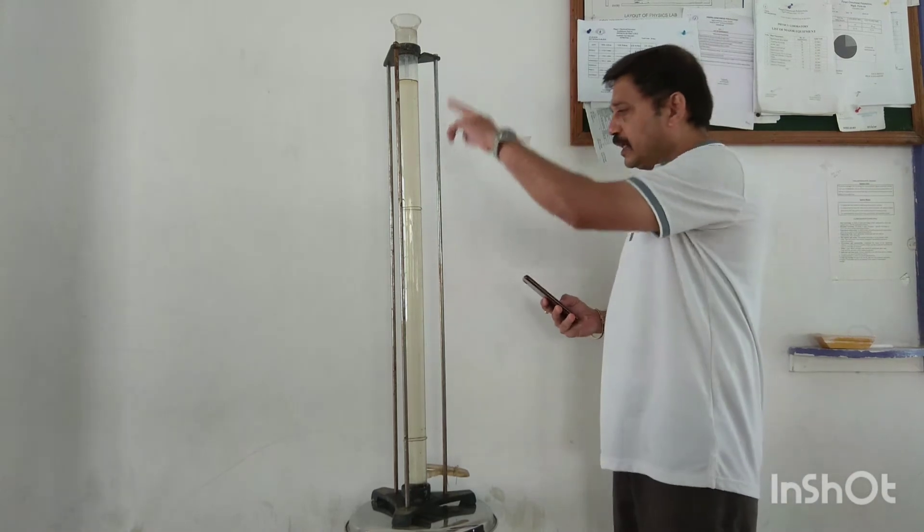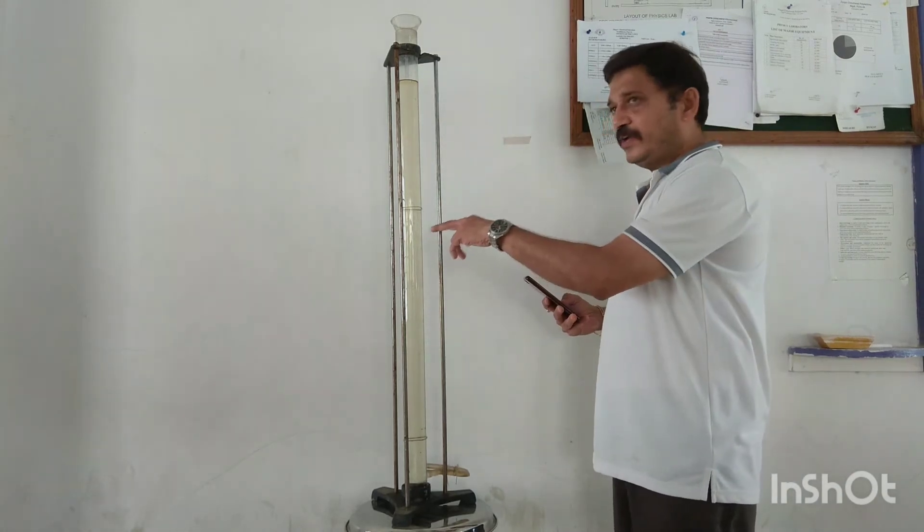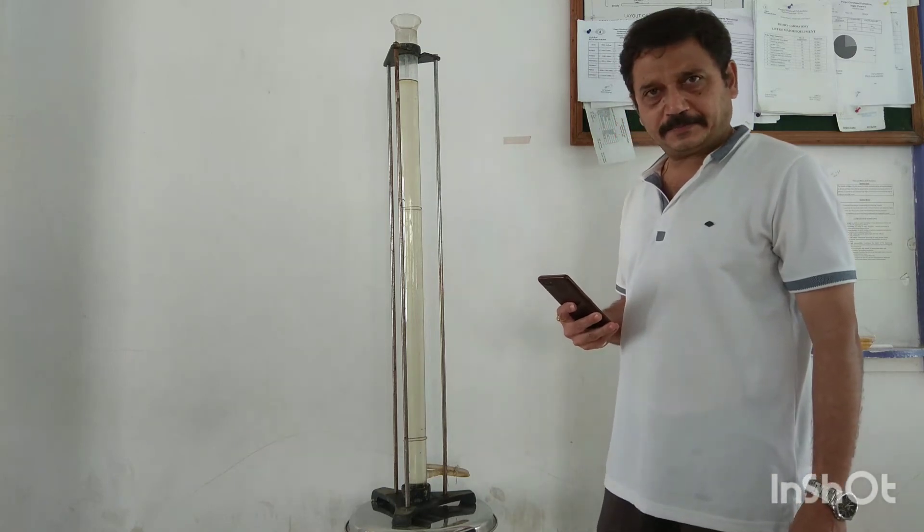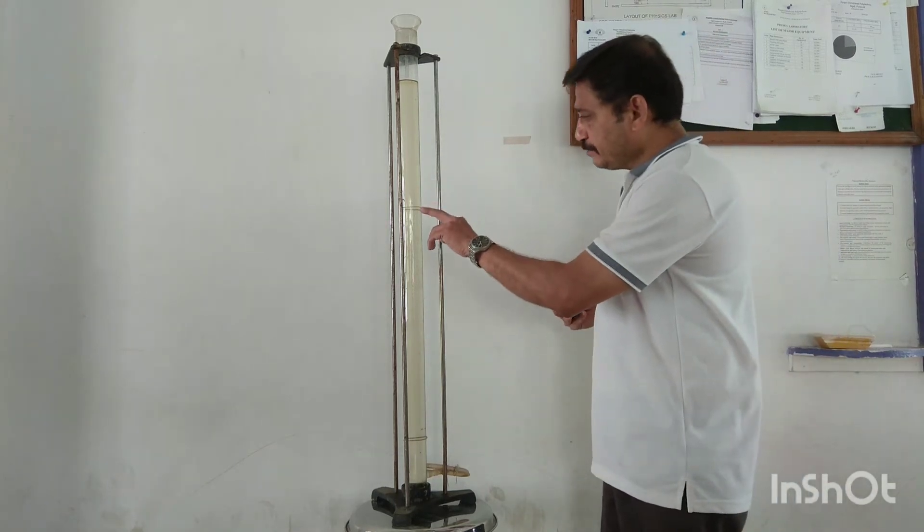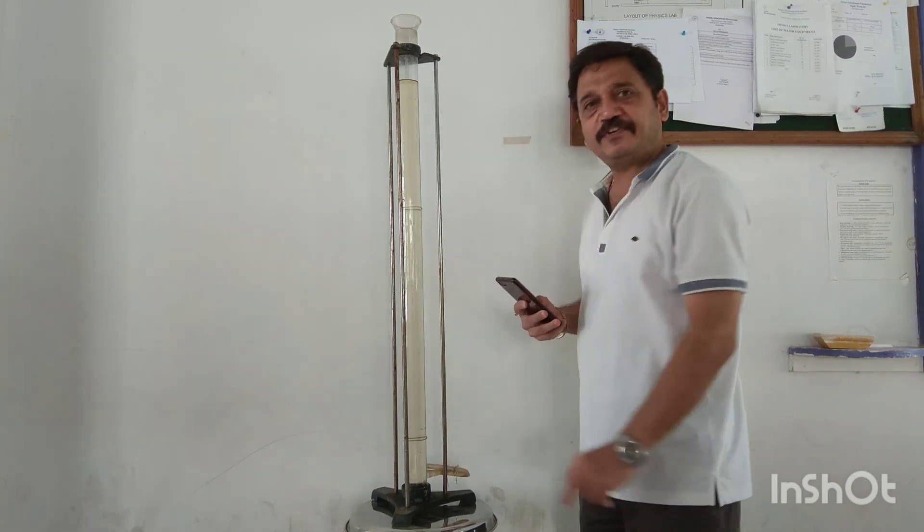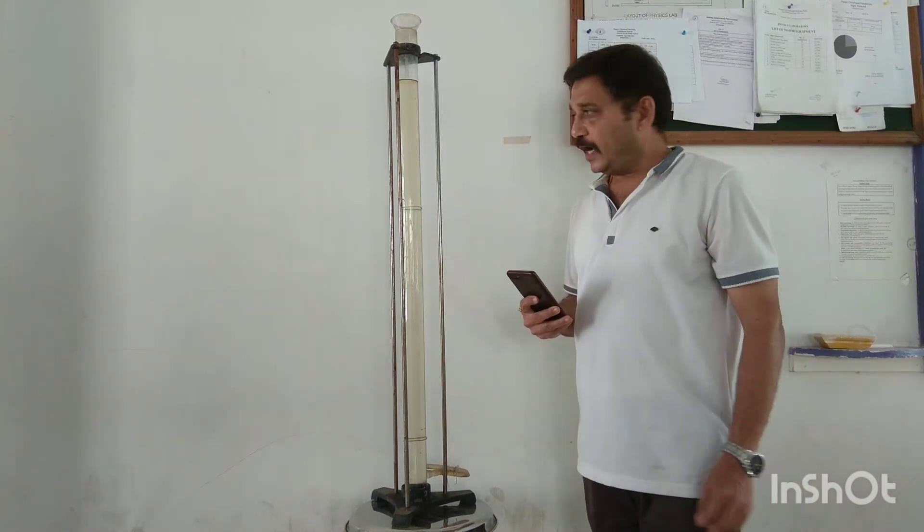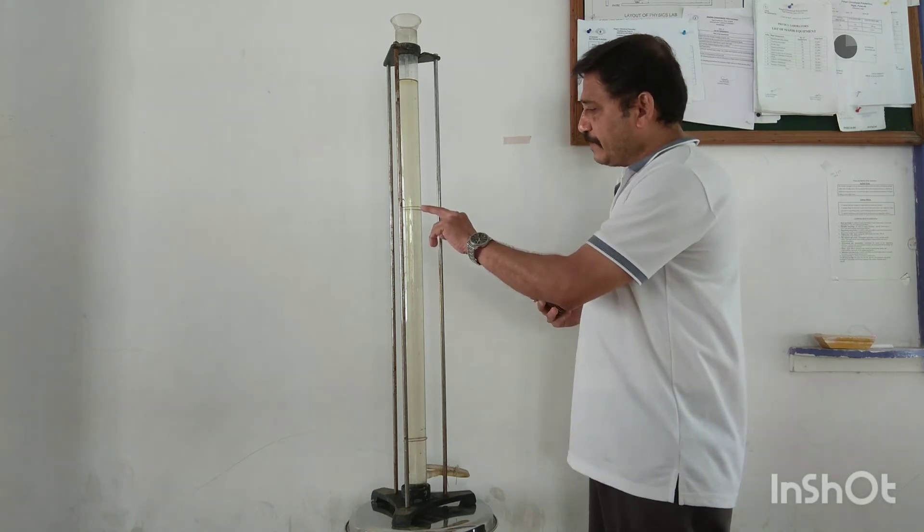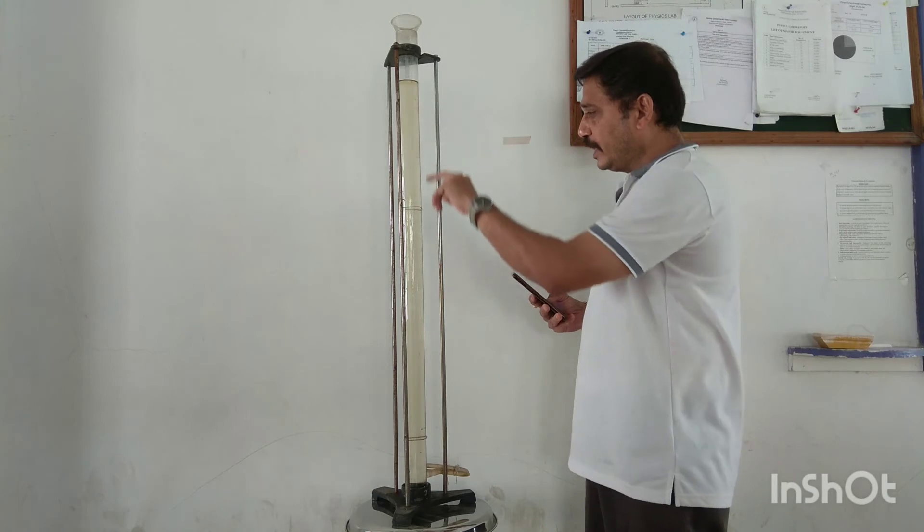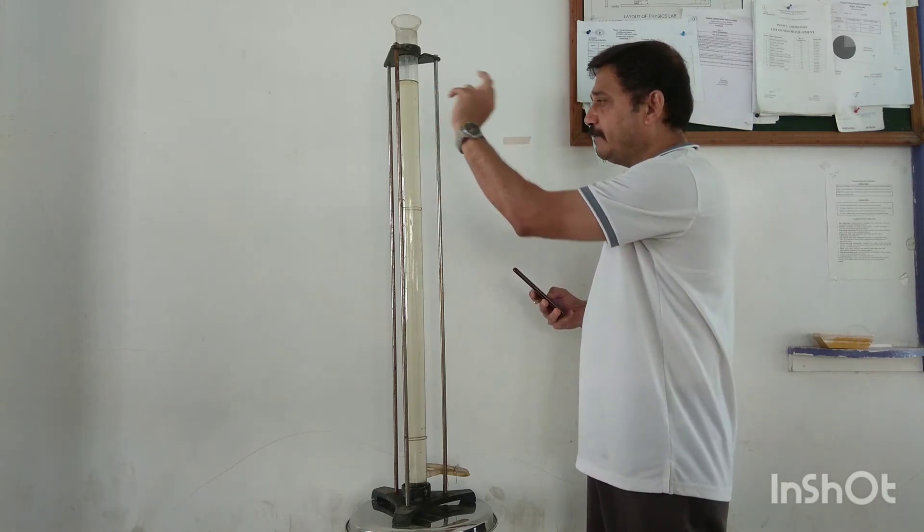Now, this is a tall glass jar. Inside this I have taken a liquid—that is glycerin—whose coefficient of viscosity is to be determined. And here is marking A and marking B. The distance between A and B is 50 cm. And the condition is that marking A should be at a sufficiently lower level than the liquid surface.